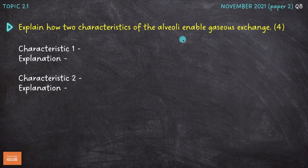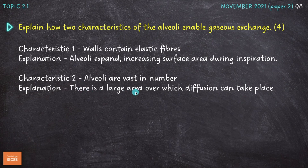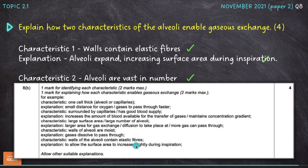Next question: explain how two characteristics of the alveoli enable gaseous exchange. This question looks very familiar, highlighting how often questions get repeated in exams. Characteristic one: the walls contain elastic fibres, enabling the alveoli to expand and increase surface area during inspiration. Characteristic two: alveoli are vast in number, meaning there is a large surface area over which diffusion can take place. Other valid points include: alveoli are one cell thick, reducing diffusion distance; they are surrounded by capillaries; and the walls are moist, aiding gas dissolution.